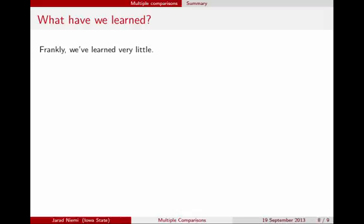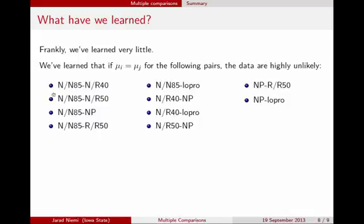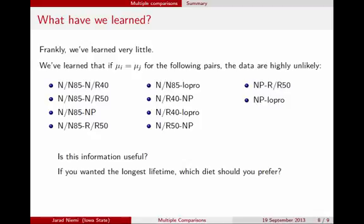Still at this point, I want to point out that we haven't really learned a whole lot. What have we really learned? We've learned that if the null hypothesis is true, that is, for all the pairs of data that the means are actually equal, then these data that we see are highly unlikely. So these pairs seem highly unlikely. These are the pairs that we think there's some significant difference, but again, we don't really have a good idea about how big is this difference, or trying to answer questions like, if you wanted the longest lifetime, which diet should you prefer? And finally, does it really make a difference? This is getting at practical versus statistical significance. So in the future slides, we're going to be talking more about constructing confidence intervals for these pairwise differences and looking at contrasts, which get at more specific questions about what's going on. Thank you.